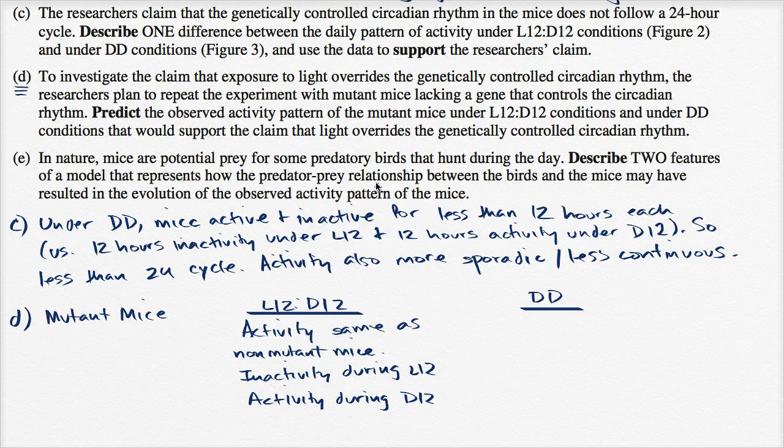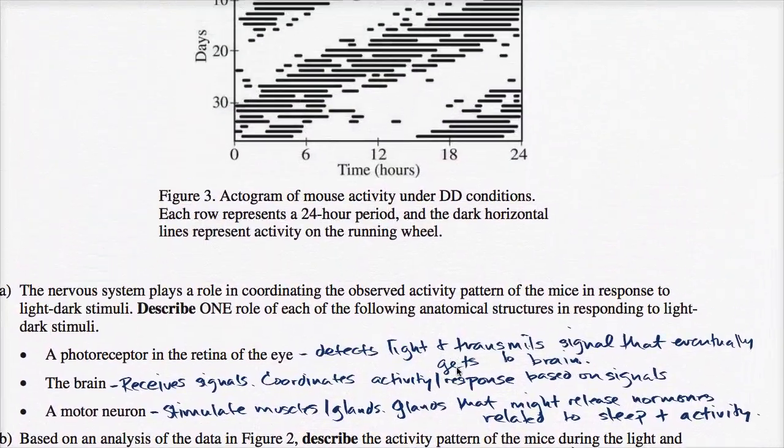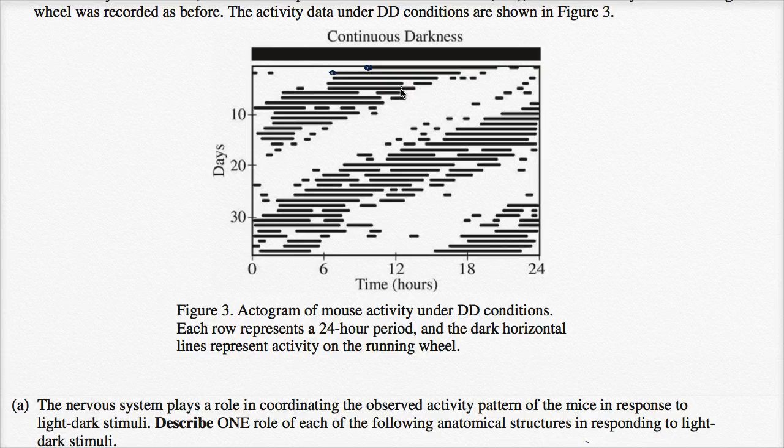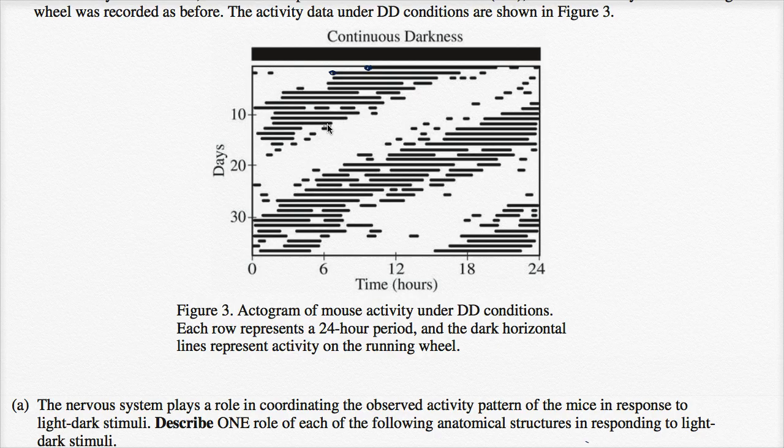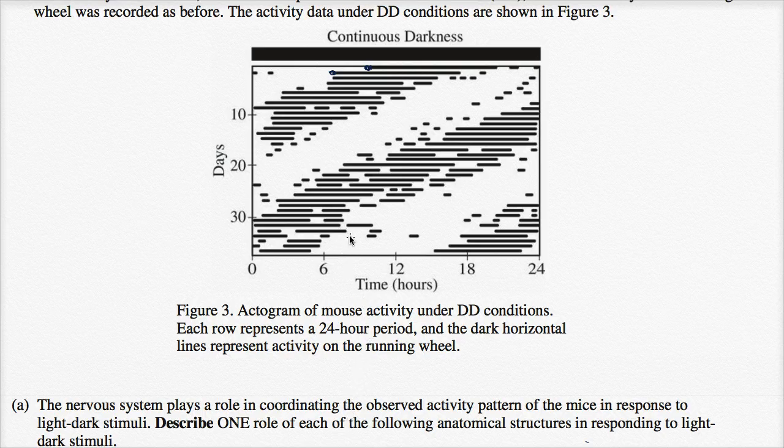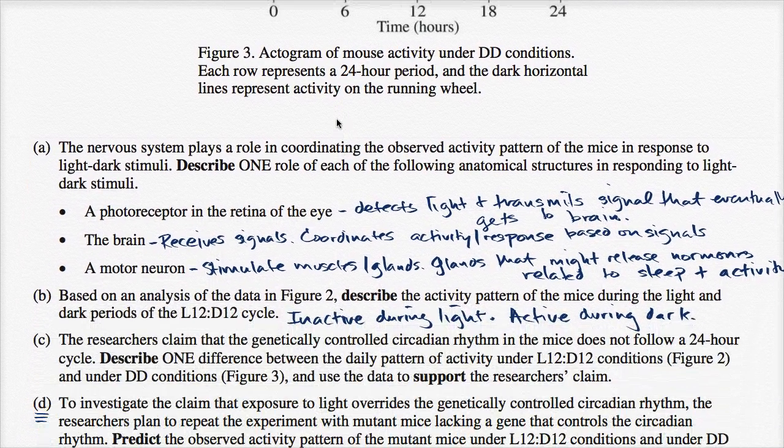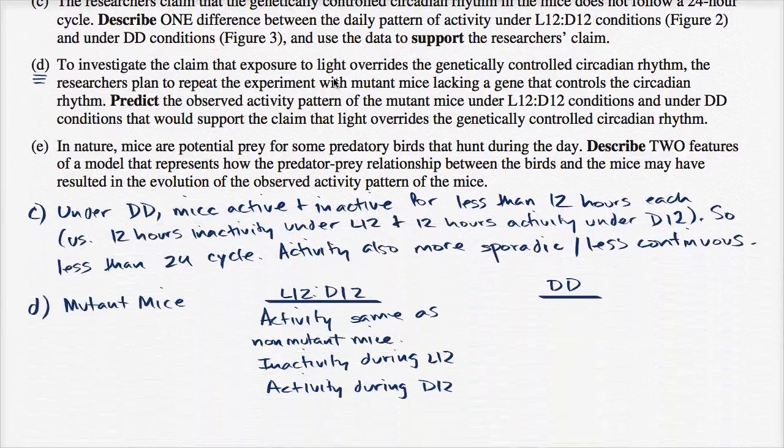Now what about continuous darkness? The non-mutant mice, we said that they went off of a 24 hour cycle, but they still had a cycle where they were inactive, active, inactive, active. And it was less than 12 hours for each cycle, but it was close to, it was maybe nine, 10, or 11 hours of activity, followed by nine, 10, or 11 hours of inactivity. I would guess that a mutant mouse that has no, that doesn't have some of these genes for circadian rhythm, well, for them it's just gonna be, it's just gonna be random. It's just going to be much more sporadic.